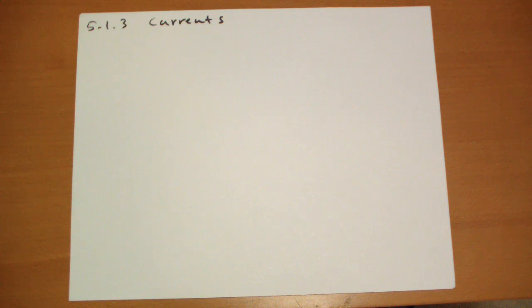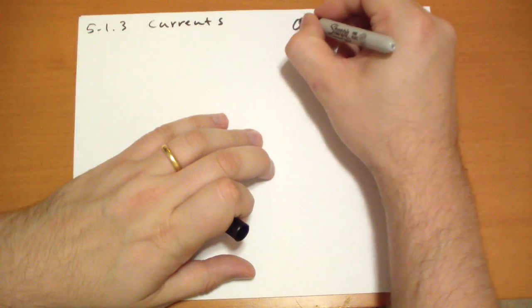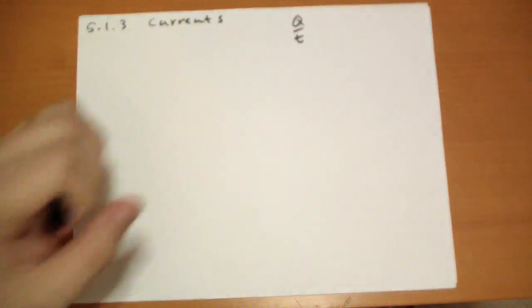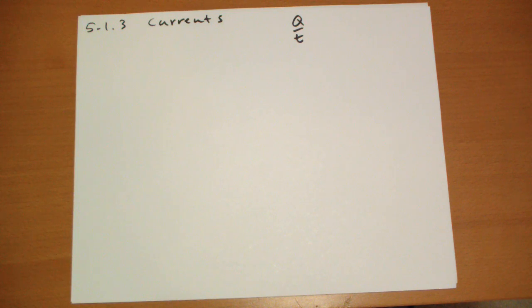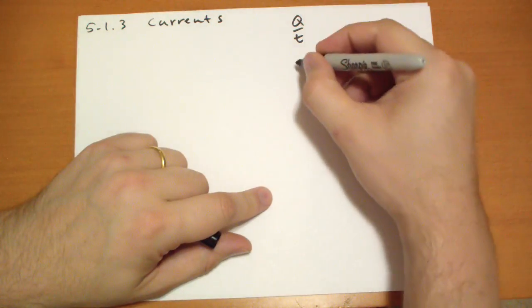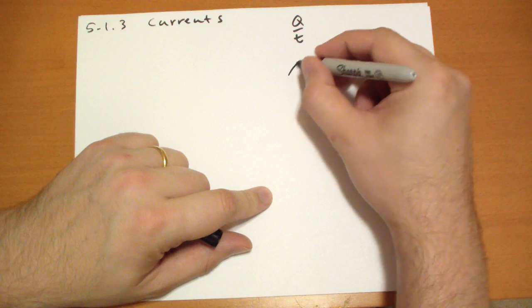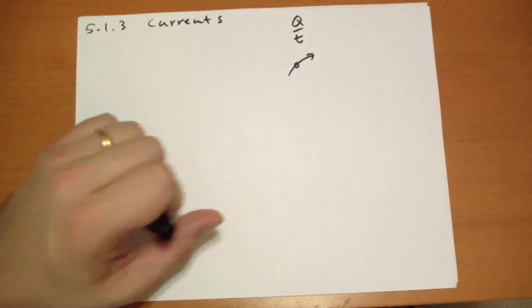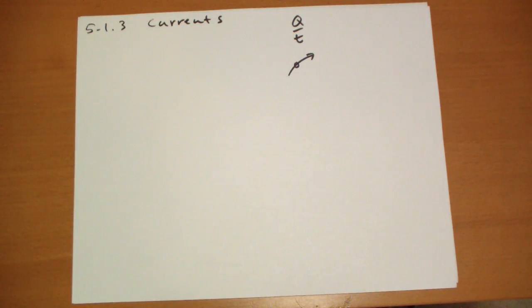So currents. A current is a charge per unit time, Q over T. And we talk about currents at a point. That means you take any point in space and you look at how much current is flowing through that point. Not how much charge is accumulating, not how much charge is moving around the point, but how much it's moving through that particular point in space.